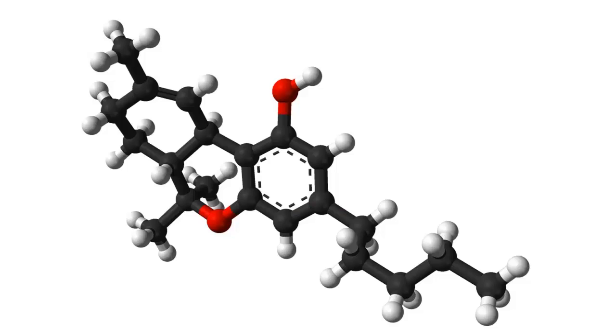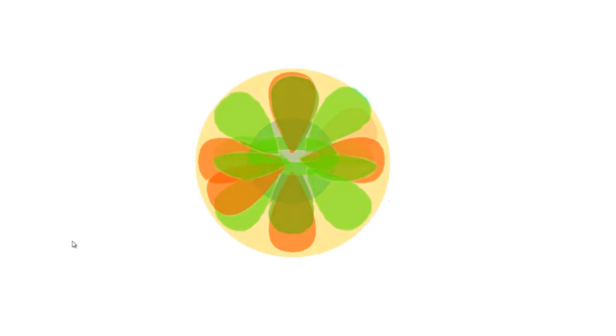So now you know how the orbitals are shaped, but how are atoms shaped? Well, you've probably seen the classic ball and stick model of a molecule which shows the atoms as spheres, and as it turns out, this is a pretty good description of what an atom really looks like. The shape of an atom is simply the shapes of its orbitals superimposed on top of one another — the s orbitals, the p orbitals, the d orbitals, and so on — all jumbled together, so the atom assumes a shape that is roughly spherical.